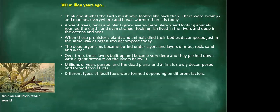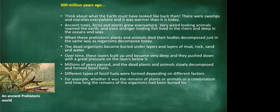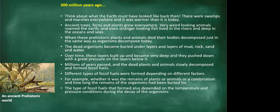Different types of fossil fuels were formed depending on different factors: whether it was the remains of plants, animals, or a combination of both; how long the remains had been buried; and the temperature and pressure conditions during the decay of the organisms. The kind of atmosphere, pressure, and temperature present when creatures decomposed determines the kind of fossil fuel we use today for our electricity.